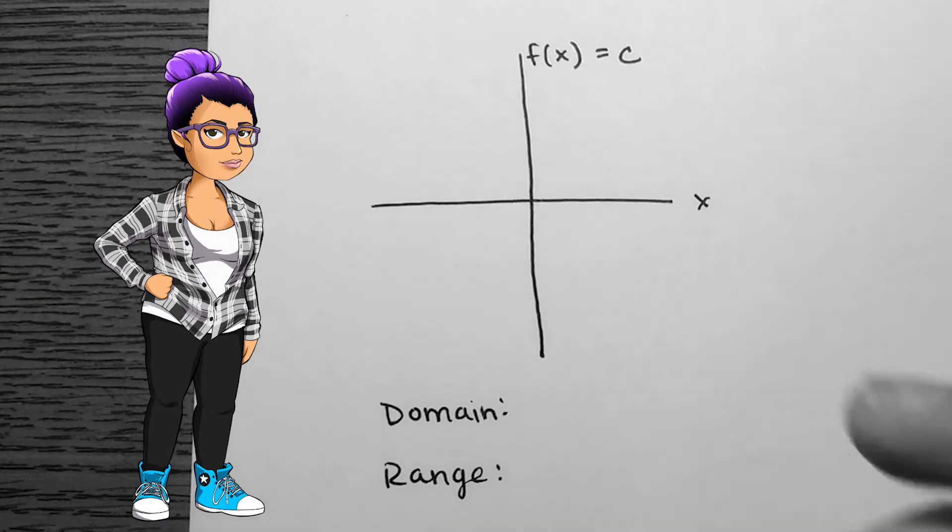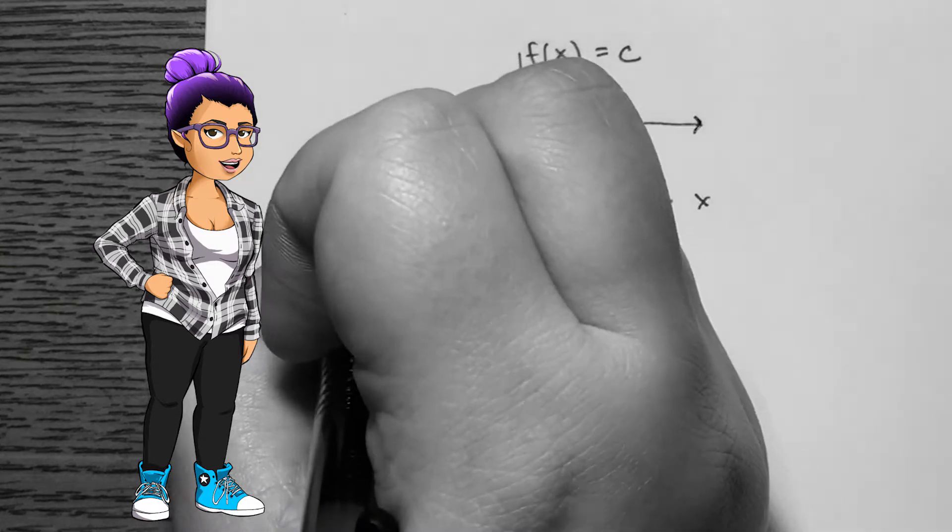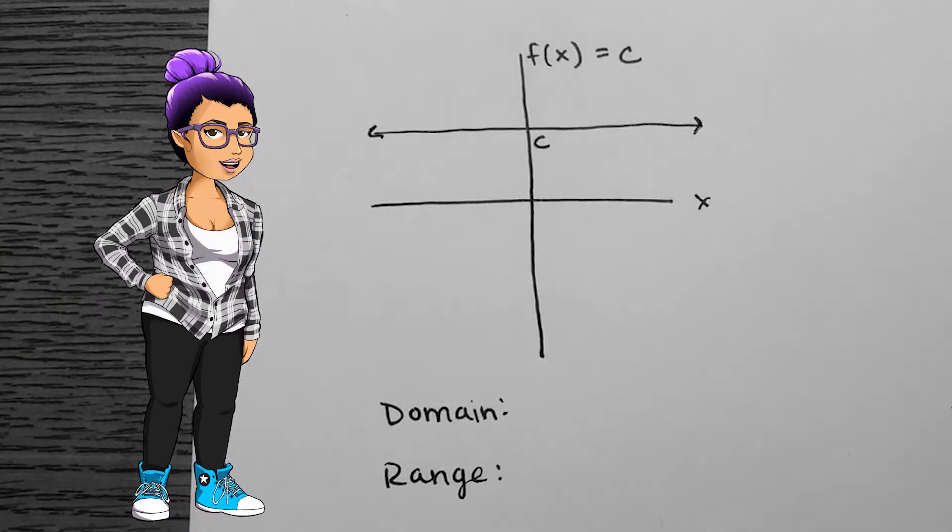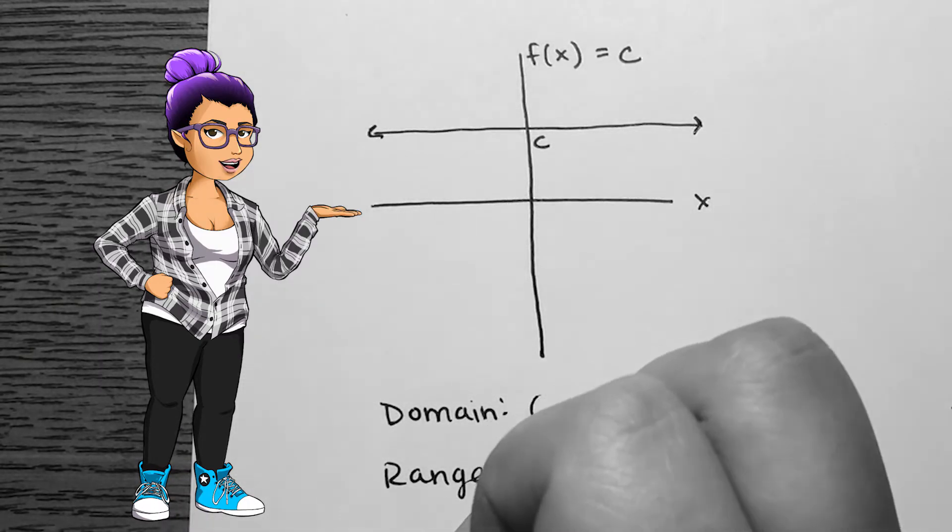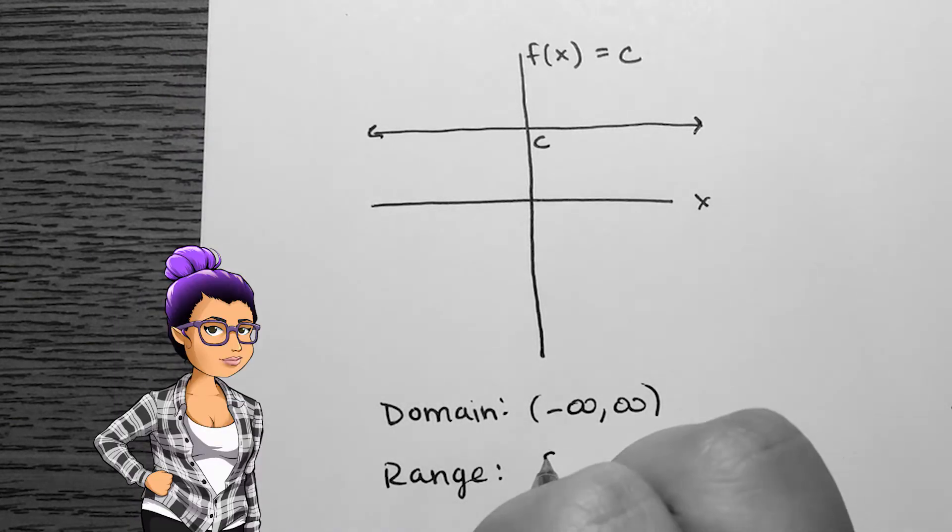The constant function can be written as f of x equals c. No matter what x is, a constant, and we'll call it c, is what comes out. The result is a horizontal line. The domain is all real numbers, negative infinity to infinity, and the range is the number c.